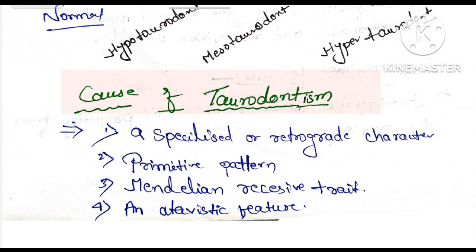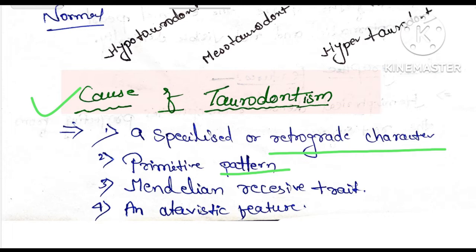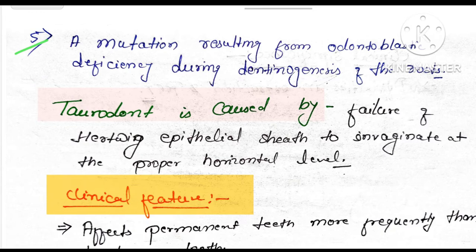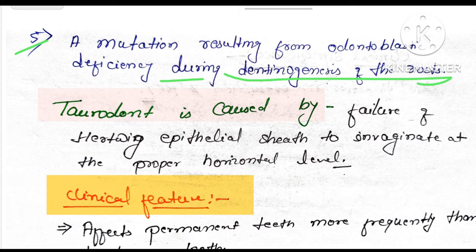Now the causes of taurodontism. First is a specialized rare retrograde character. Second is primitive pattern. Third is Mendelian recessive traits. Fourth is atavistic features — meaning changes in biological structures related to genetics. Fifth is mutations resulting from odontoblastic deficiency during odontogenesis of the root.